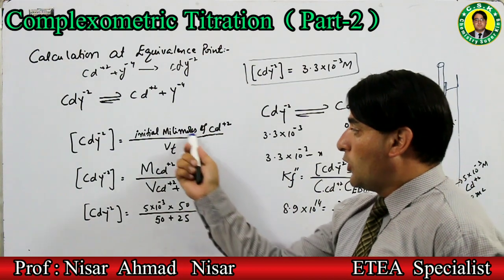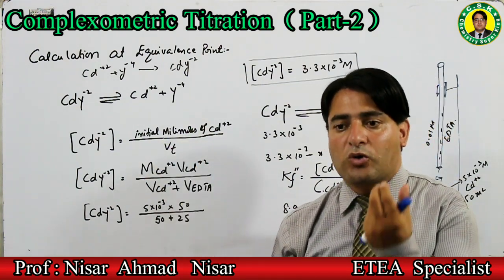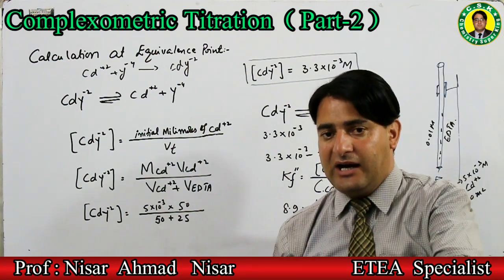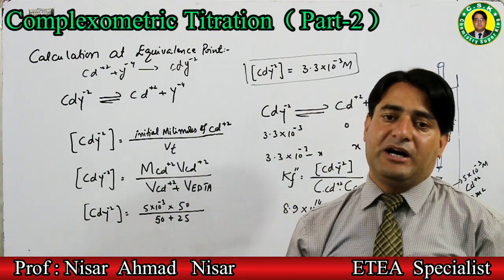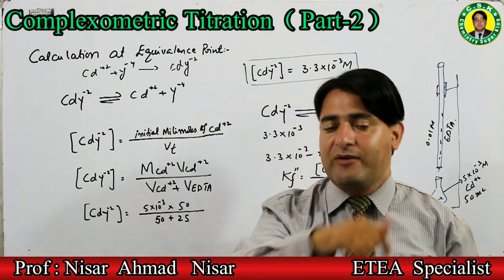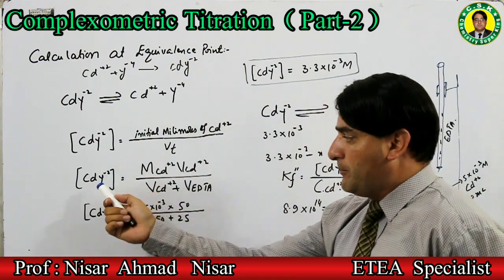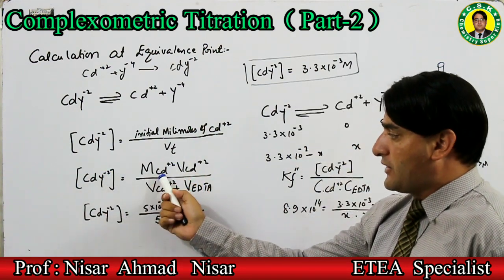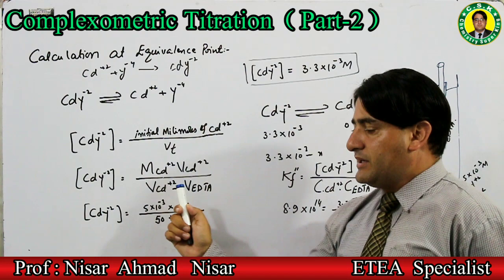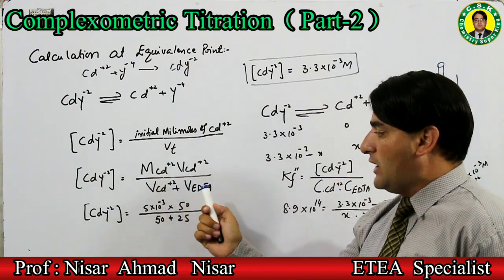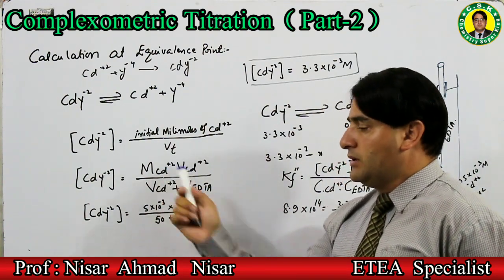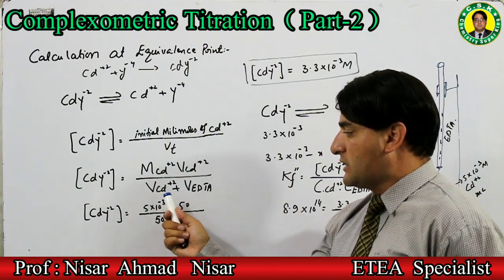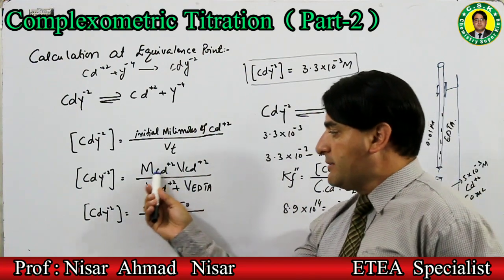Total volume = volume of cadmium ion solution (conical flask) + volume of EDTA added۔ Equivalence point پہ 25 mL EDTA add کیا، تو complex concentration = molarity of cadmium ion × volume of cadmium ion ÷ (volume of cadmium ion + volume of EDTA)۔ Values put کریں گے: cadmium ion concentration = 5×10⁻³ M، volume = 50 mL۔